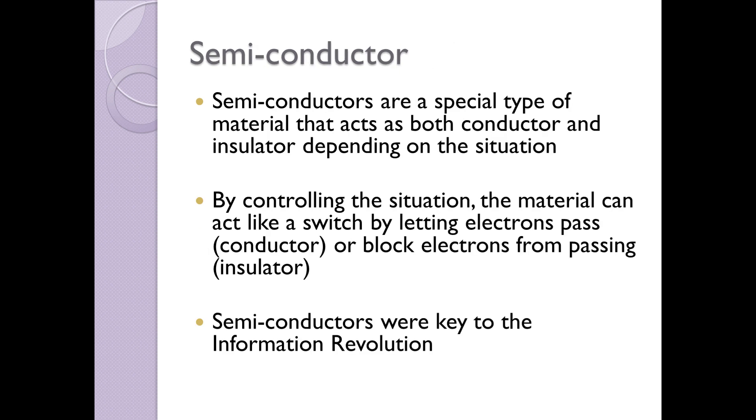There is a third class of material, and that third class of material is called semiconductors. Semiconductors are really important because they were basically what enabled the information revolution that we have now. And semiconductors are a special type of material that can act as either a conductor or an insulator depending on the situation. And so by controlling that situation, I can make the material act like a switch by letting electrons pass as a conductor or block electrons from passing as an insulator.